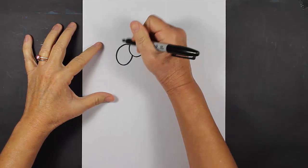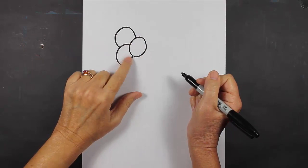And then the third circle, the same thing, it's going to be behind these two circles. These are going to be the berries on our holly.